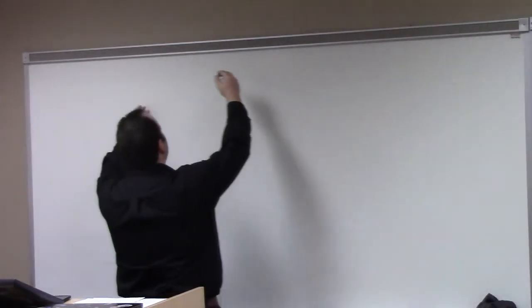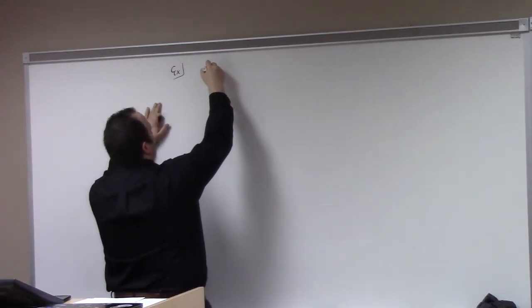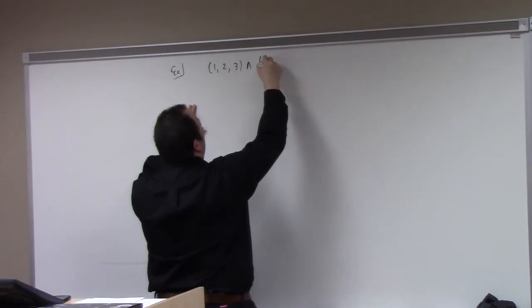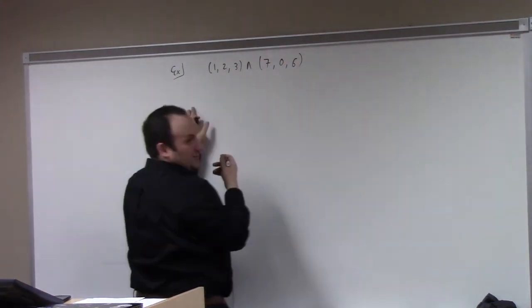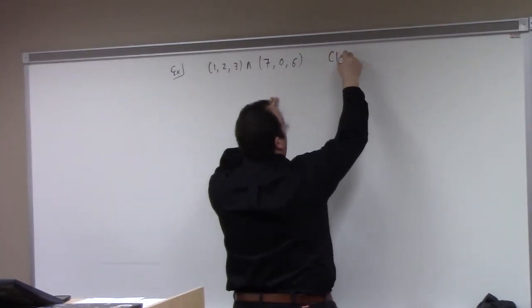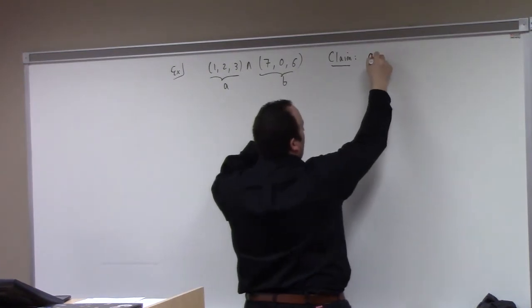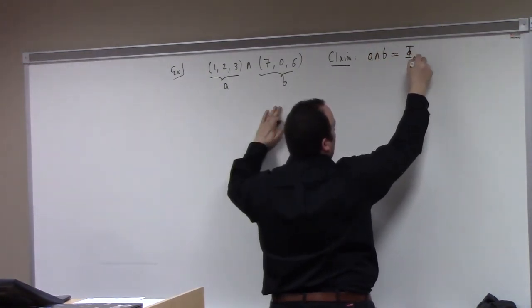Determinants are actually way worse — but because it's a number and I gave you a formula, you don't feel so bad about it. These wedge products are actually simpler, but they're very abstract. So here's an example. Let's suppose we have the vector 1, 2, 3 and we want to study the wedge of that with 7, 0, 6. My claim is that if we look at a wedge b, it corresponds to the cross product of a and b.